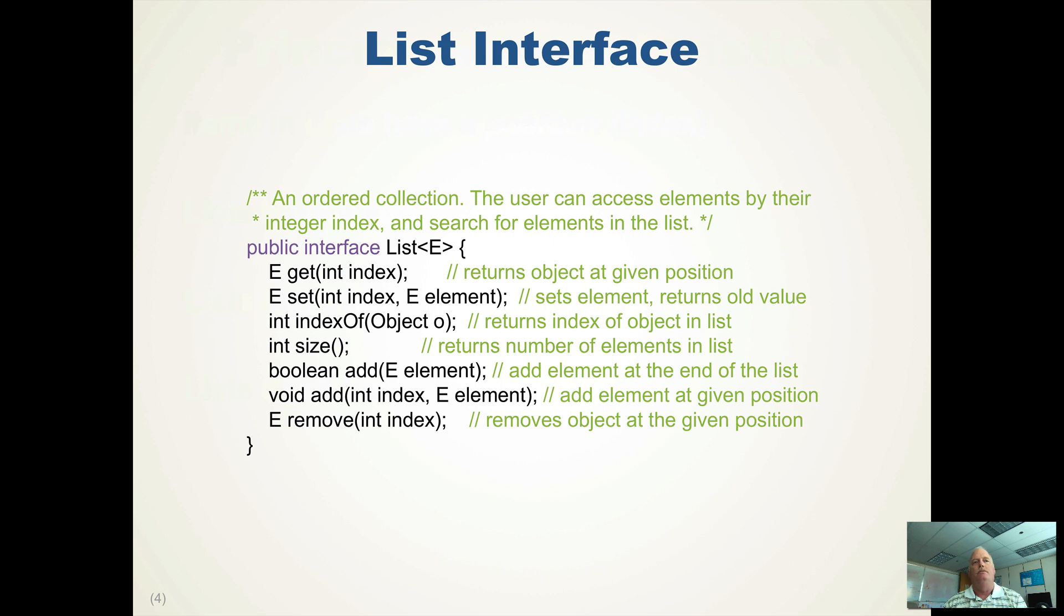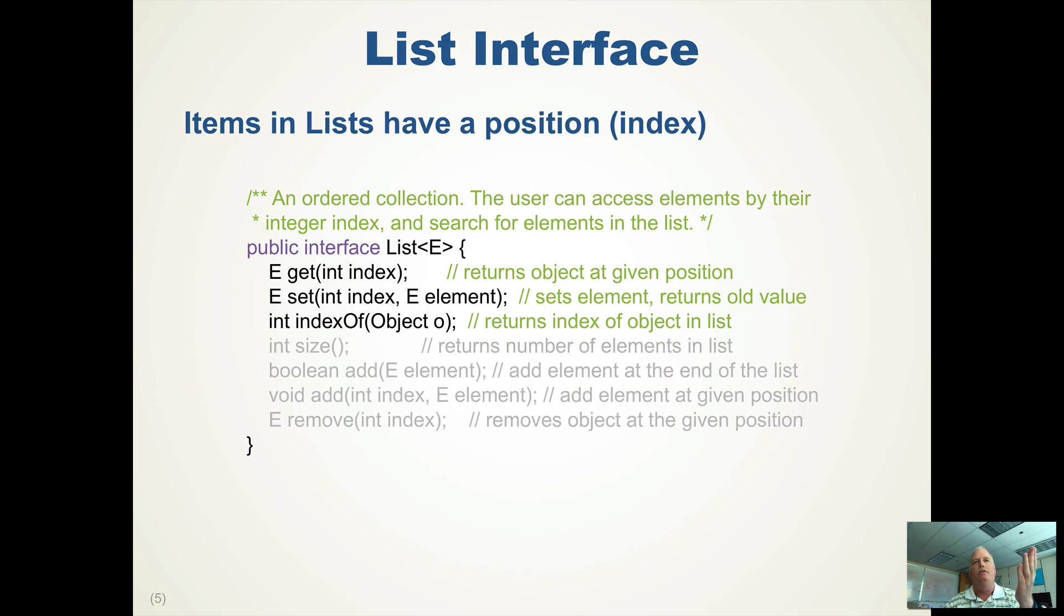So there are seven methods in the general interface. The first three talk about the position of the items. So you can say I want to get the item at the index, which returns the item at the given position. I can set an item at the given index, which is I want to replace what is in the list with a new item. I'm not adding a new item, I'm replacing it. I'm getting rid of the old one and I'm putting in the new one. And I can say, where is this thing in the list? Where's the index? What's the position of this object?